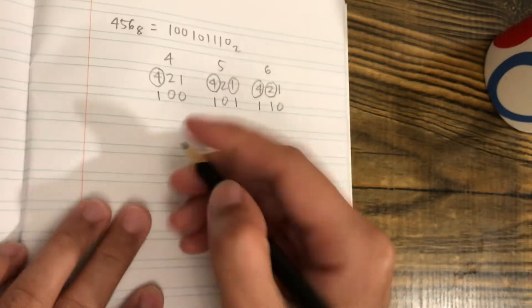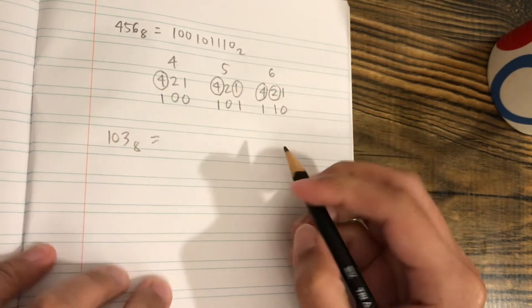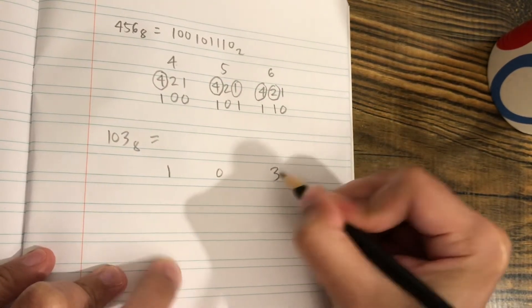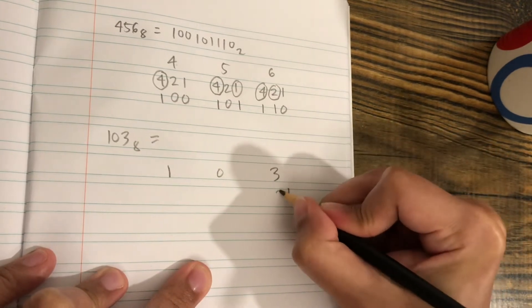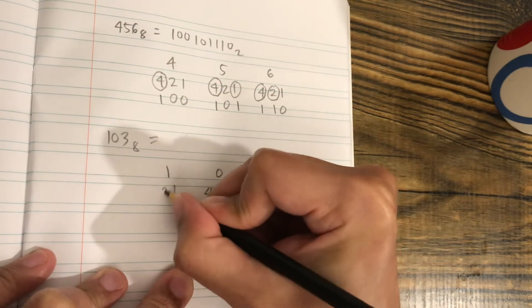For the second example, 103 in octal. How do we convert it to binary? We separate the three digits, then put 1, 2, 4; 1, 2, 4; 1, 2, 4.